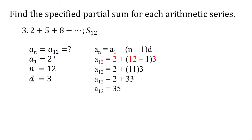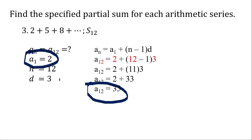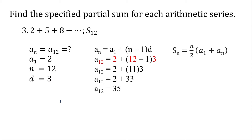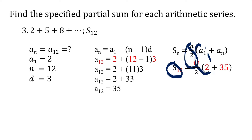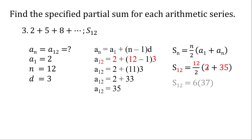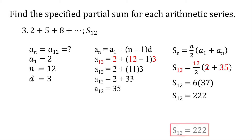So 33 plus 2 is 35. Now we have our first term, our last term, and n. Let's get the sum: 12 divided by 2 is 6, then 2 plus 35 is 37, and 37 times 6 is 222. That's the sum of the first 12 terms.